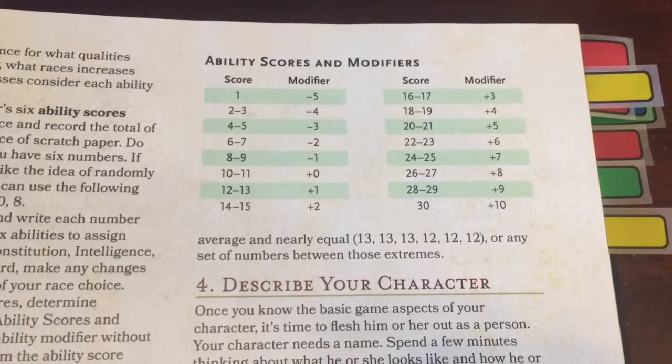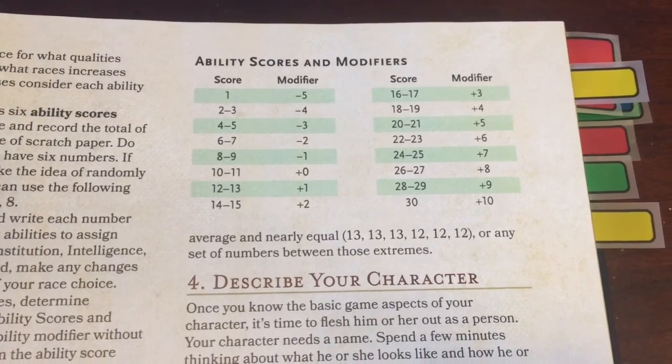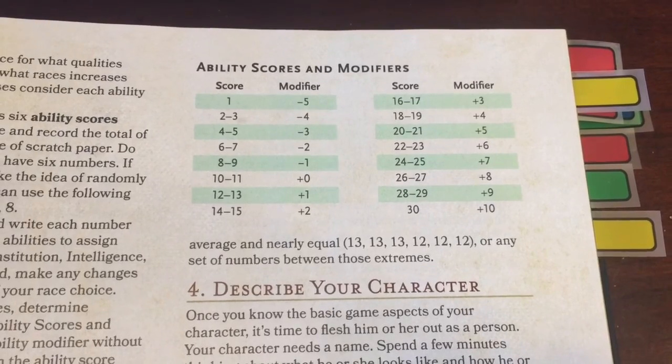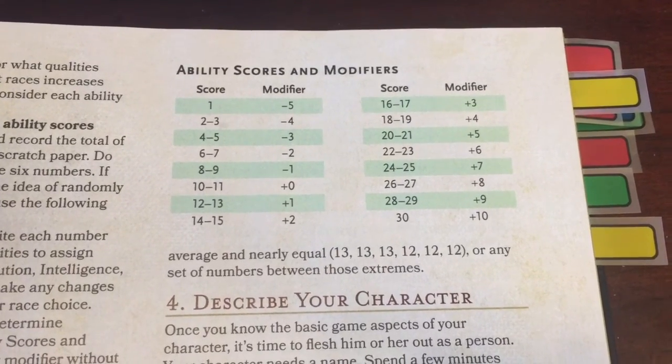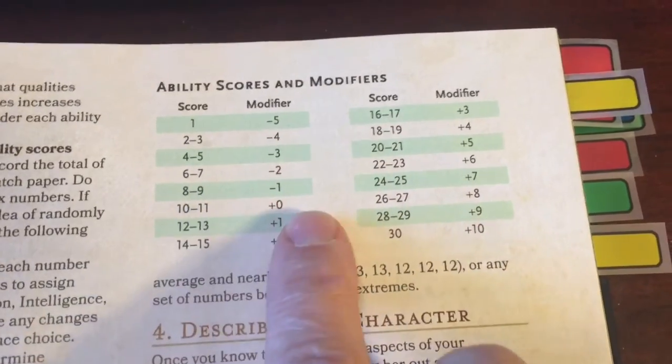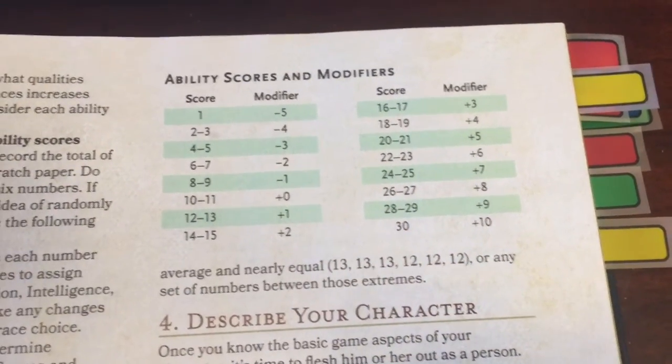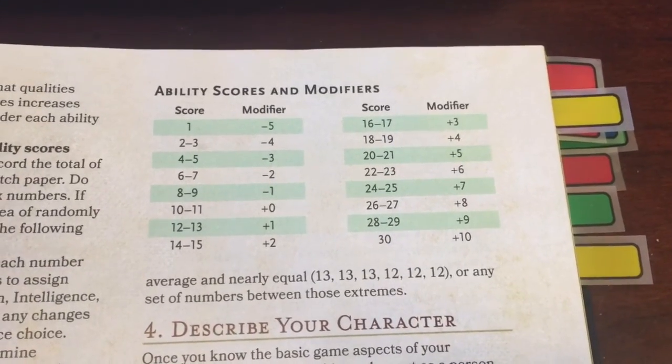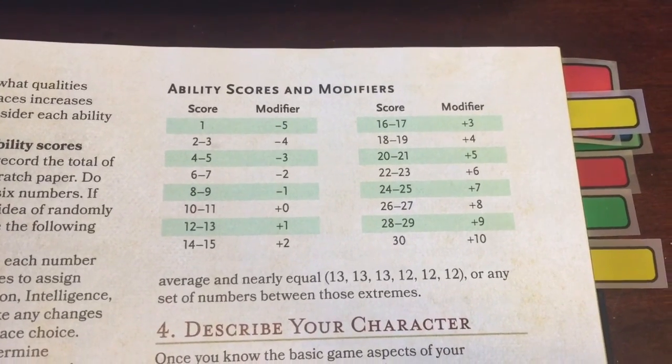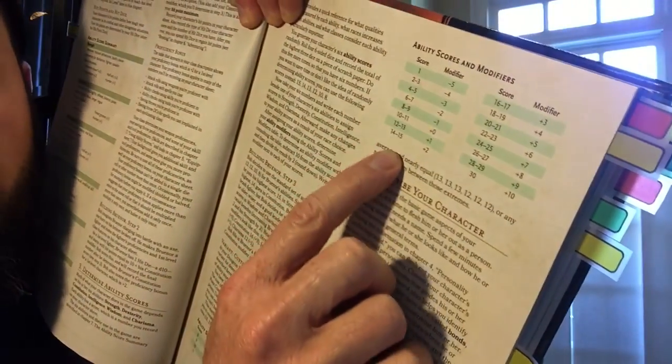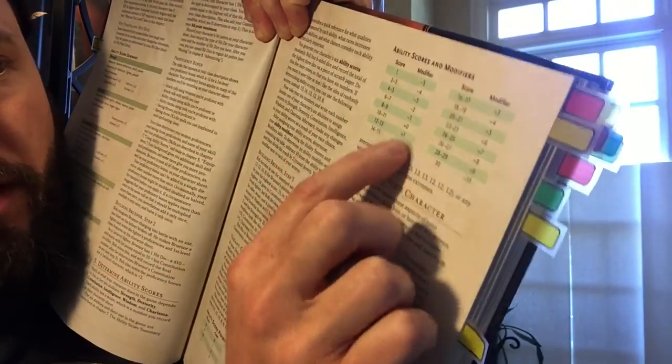Those are what you add to any sort of check that requires something within an ability. So, for example, if your ability score for strength is 13, you would look here. See that it says 13, so you would add plus 1 to any strength check. So you roll your 20-sided dice and it lands on 11. You would say, I get 12, 11 plus 1. So that's kind of how those work and why they matter. So that's the ability score and the modifier, but where do you get this number from to start with? You use the table to determine what the modifier is, but where do you get the score from?